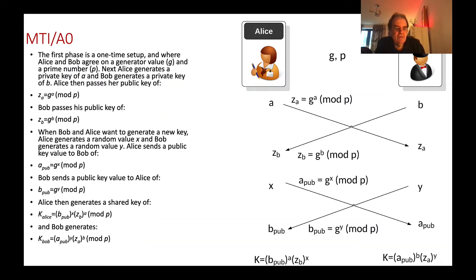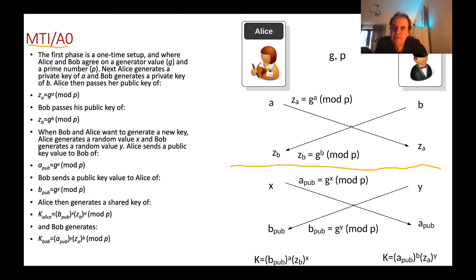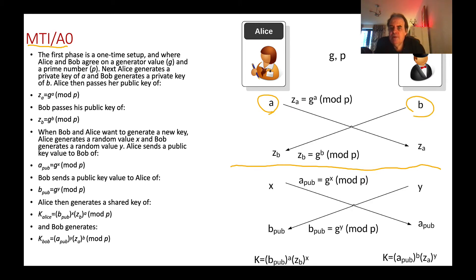The methods defined within MTI include A0. With this, there is an initial setup phase where Bob and Alice communicate their long-term keys. This could be done in an authenticated way where we made sure that Alice was Alice and Bob was Bob. Alice and Bob generate A and B, and then we end up with a long-term value of ZB and a long-term value of ZA.